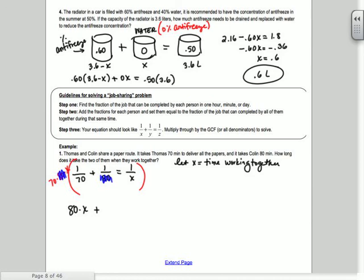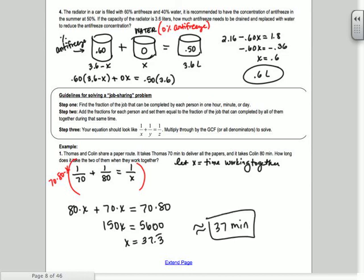So you'd have 70 times 80 times 1. So you get that. So you get 80X plus 70X. So you get 150X equals 70 times 80. So 5,600. So X equals 37.3 repeating. So it takes them working together about 37 minutes. You could say 37 and a third if you want. Or 37 minutes and 20 seconds. You could even say that. A third of a minute. All right, makes sense?